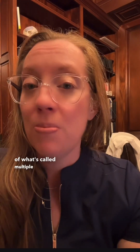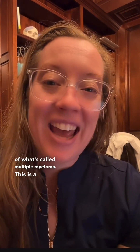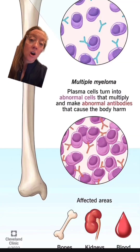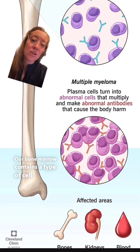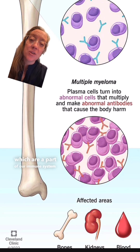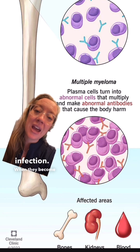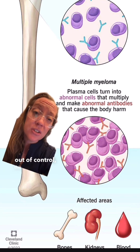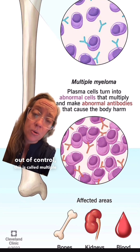Lytic lesions within the bone, including our spine, are usually a result of what's called multiple myeloma. This is a cancer or malignancy within our bone marrow. Our bone marrow contains a type of cell called a plasma cell. This cell makes antibodies, which are part of our immune system that help us fight infection. When they become cancerous and grow out of control, this is called multiple myeloma.